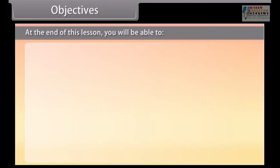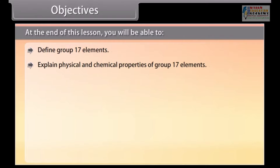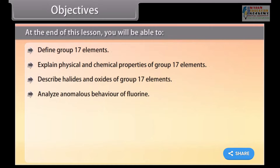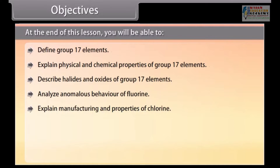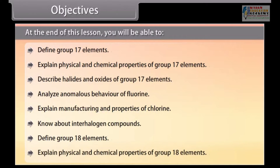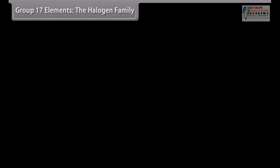At the end of this lesson, you will be able to: define group 17 elements; explain physical and chemical properties of group 17 elements; describe halides and oxides of group 17 elements; analyze anomalous behavior of fluorine; explain manufacturing and properties of chlorine; know about interhalogen compounds; define group 18 elements; and explain physical and chemical properties of group 18 elements.